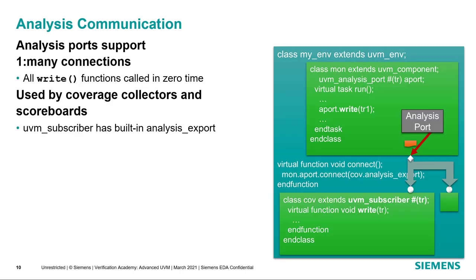We may need one component to communicate to multiple other components. This type of connection is called an analysis port in UVM, and it's denoted by a diamond. With an analysis port, the API is simply a function called write. When you call write in the originating component, it calls the write implementation in all connected components. Every connection to the analysis port supplies an implementation of write, and each operates on the transaction passed in. Each contains a pointer to the original transaction, so if one subscriber modifies it, all subscribers will see that change — we recommend making a copy before modifying.